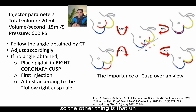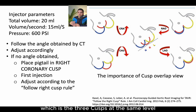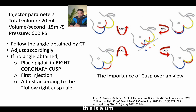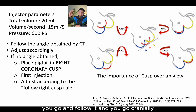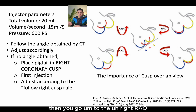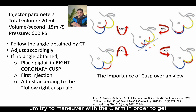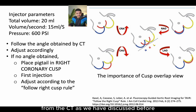You also test the optimum projection, and if you cannot see the alignment of the cusps together, you apply the right cusp rule as shown in this figure. These are my recommendations for the initial shot: a total volume of 20, 50 milliseconds per second, and PSI of 600. The other important thing is how to get the optimum implantation angle. You have the co-planner view, which is the three cusps at the same level — left, right, and non-coronary. This is a beautiful paper by Kaisel and his group on the right cusp rule: if the right cusp is elevated upwards and the others are low, you go cranially; if it's lower than the others, you go caudally; if it's hidden behind the non-coronary cusp, you go RAO; and if it's behind the left coronary cusp, you go LAO.